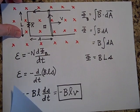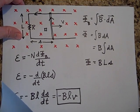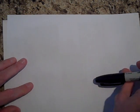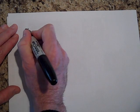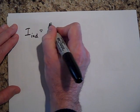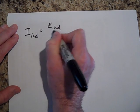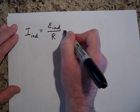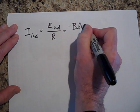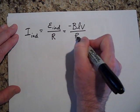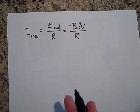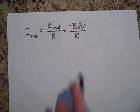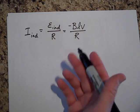To find the current in the circuit, we use Ohm's law: the induced current equals the induced EMF divided by R, which gives negative B·L·V over R. We already used Lenz's law to determine the direction, so we work with the magnitude B·L·V over R.